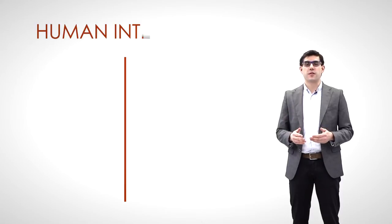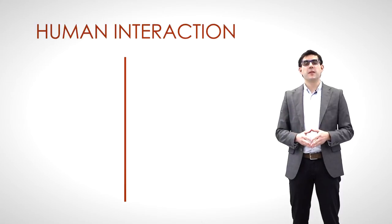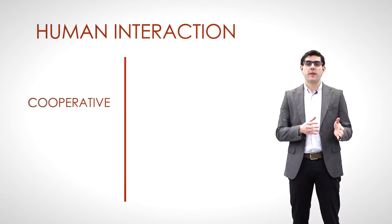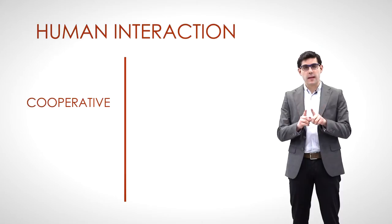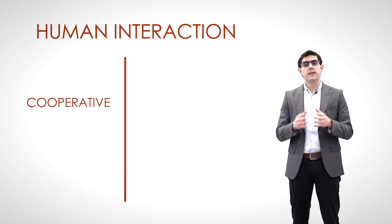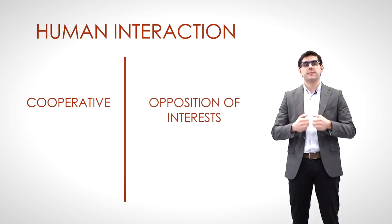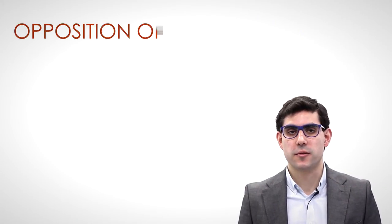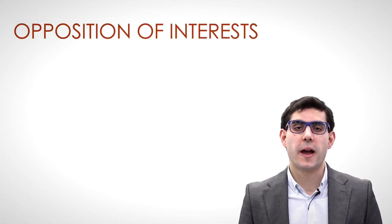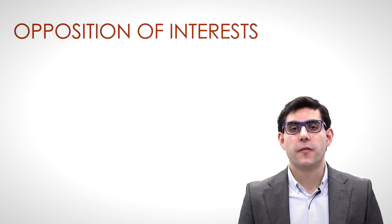There are basically two kinds of human interaction. It can be either cooperative, when interests are aligned, or it can consist of an opposition of interests. There are three ways to deal with a situation of opposition of interests, short of the use of violence.